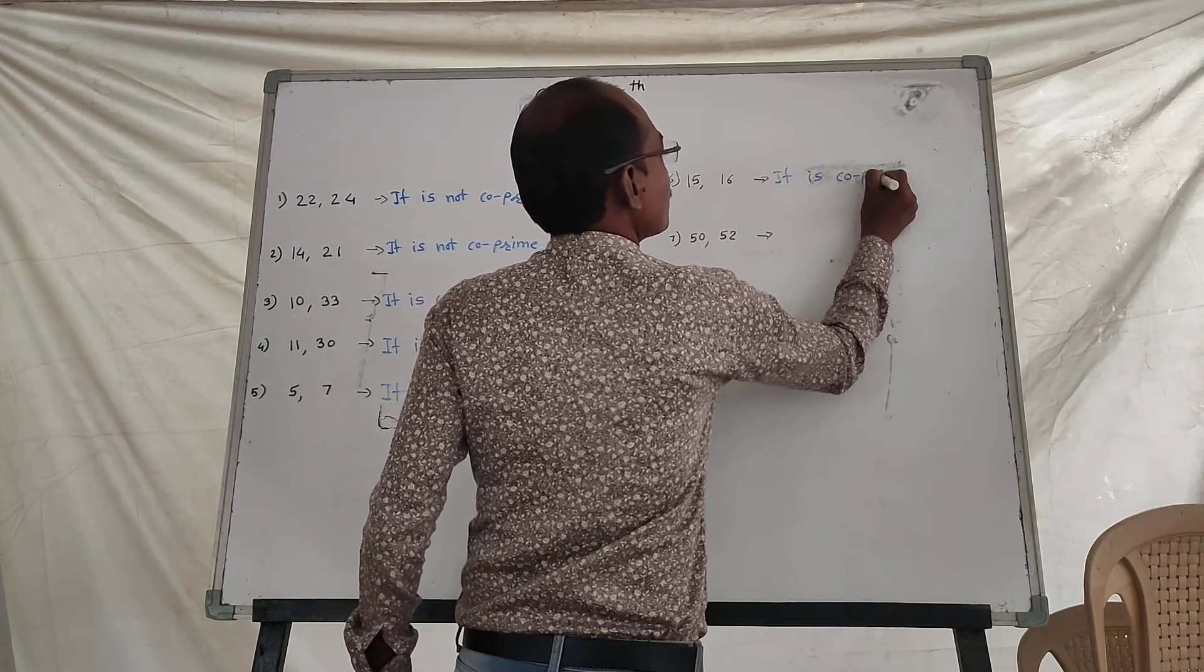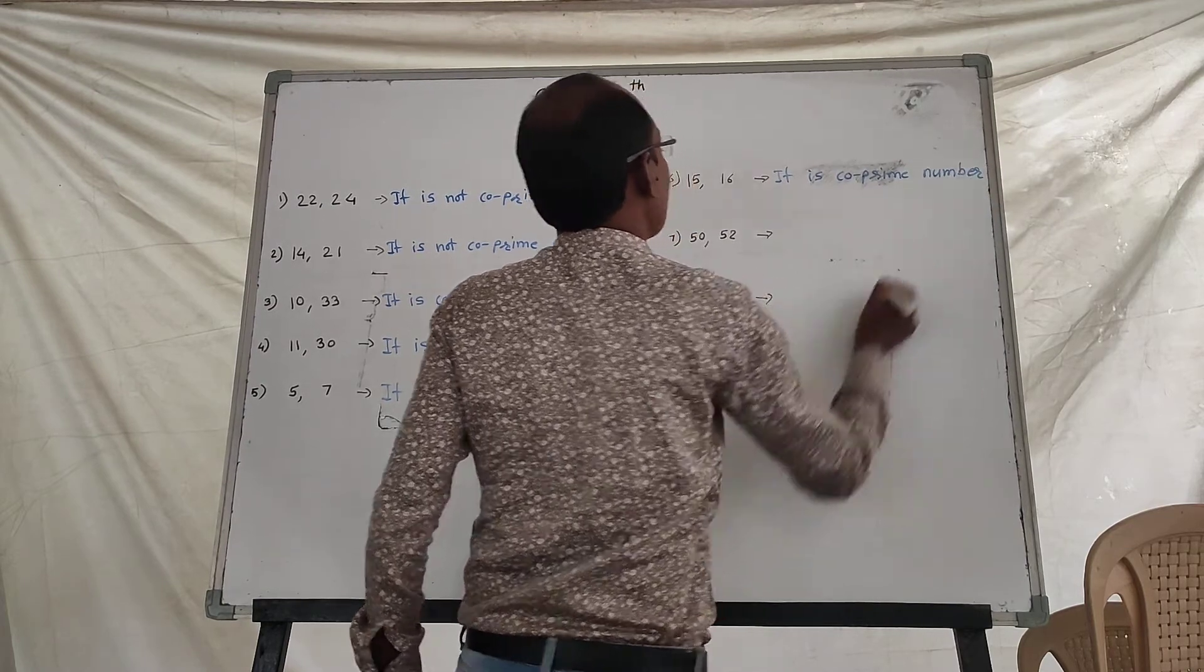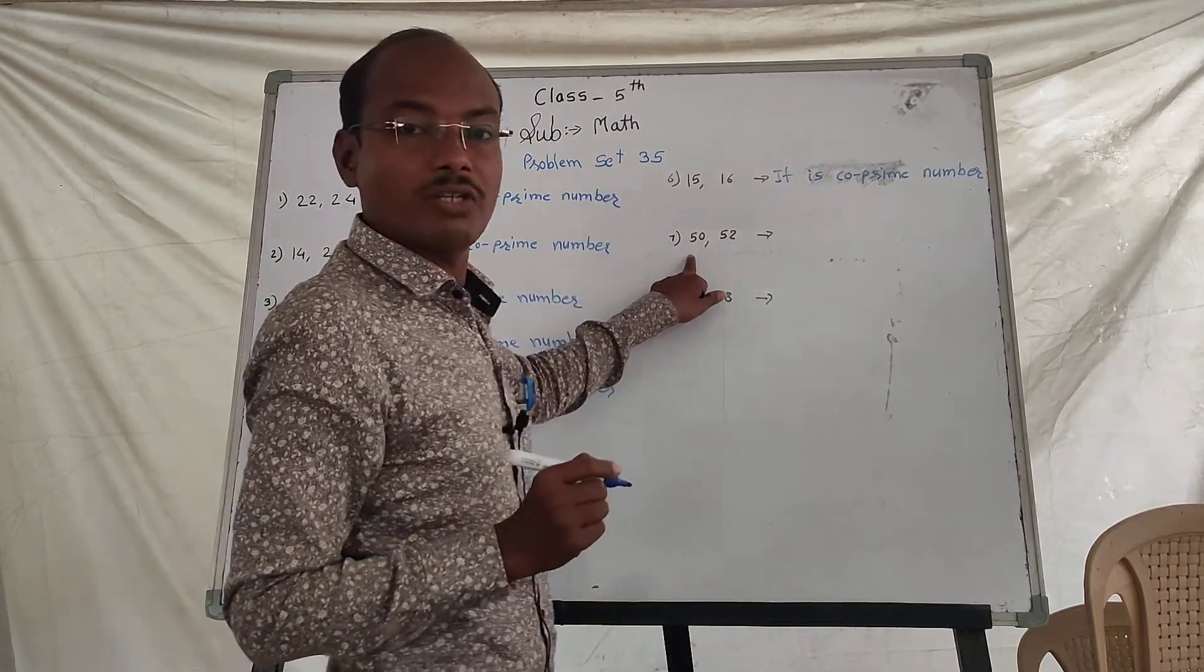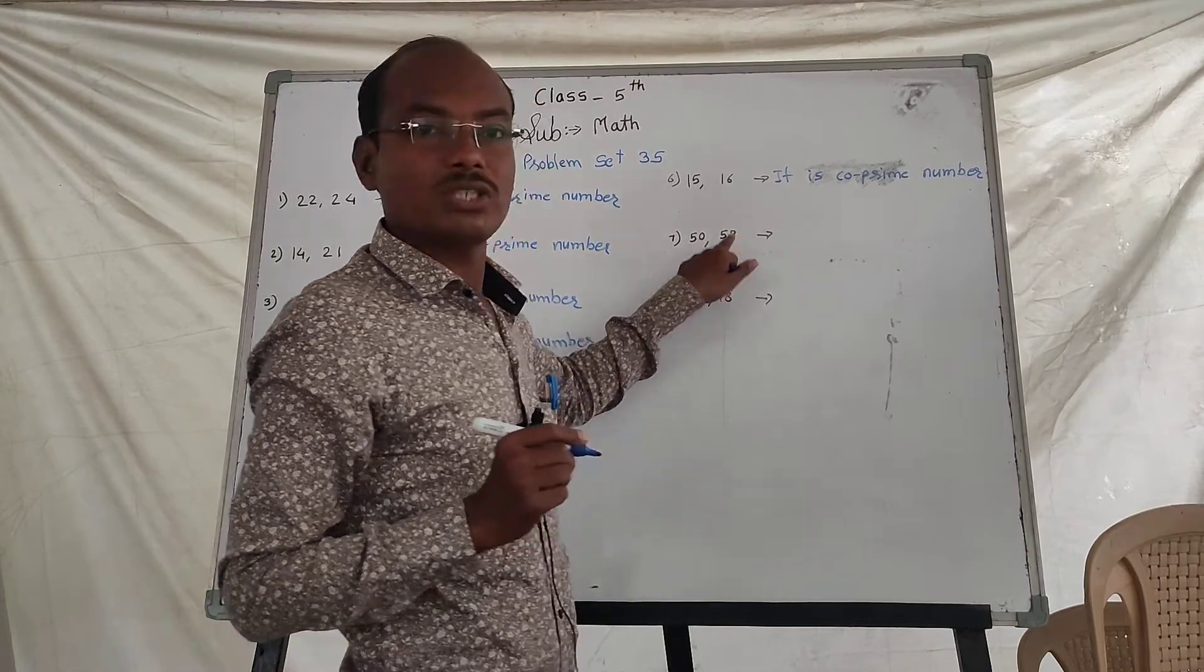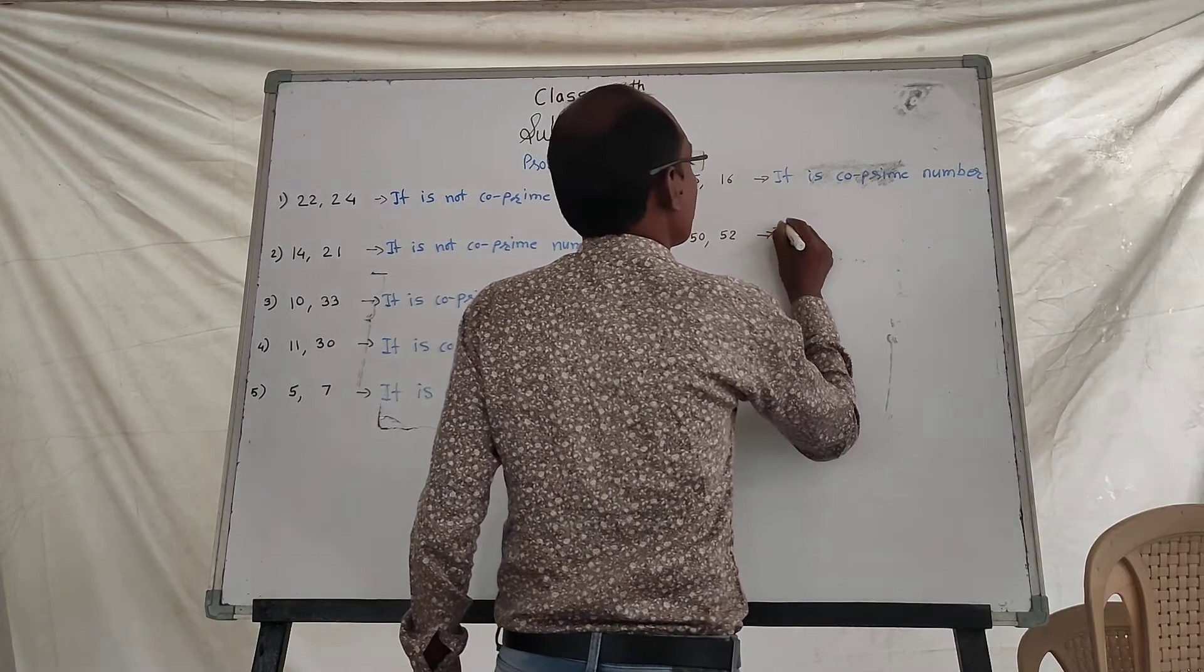On the left, 15 and 15. This is minus 3. If both are divided by the same number, they are not co-prime numbers.